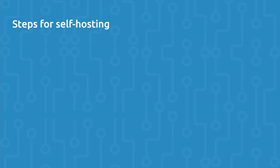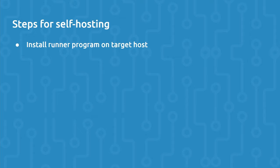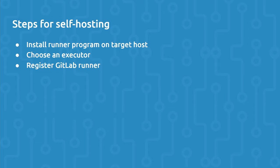So how do we self-host GitLab Runner? The first step is to install GitLab Runner on a target host — this could be on a virtual machine, your local machine, or even inside of a Docker container. The next step is to configure the GitLab Runner on the target host, which includes choosing an executor and registering the GitLab Runner with the GitLab instance. And then finally, we would run a GitLab pipeline that utilizes our runner, maybe via a tag assigned to the runner at configuration time.